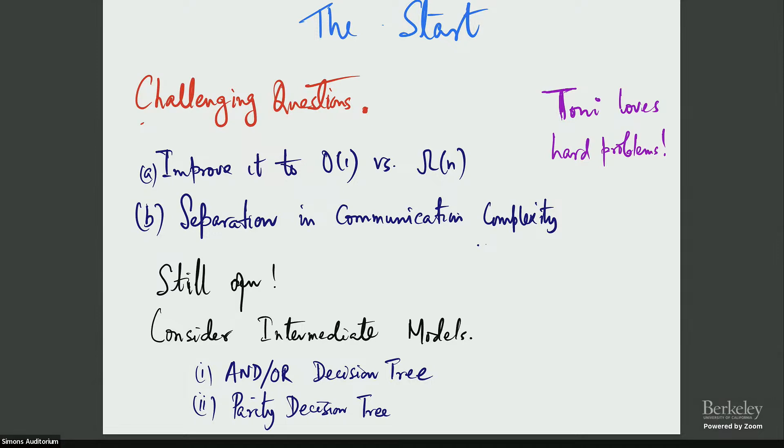So at this point, we said, let's change gears. Let's consider some intermediate models. So I was mainly interested in the communication complexity, as I said, since we couldn't prove anything there. Well, we said, let's look at some intermediate models, namely, these things OR, AND, OR-AND decision tree or parity decision tree. And let us see if we can prove similar separations like they have in these models.